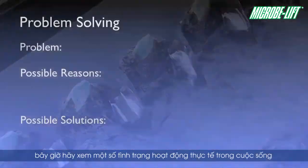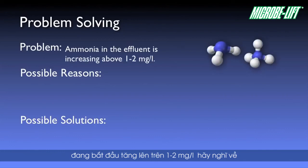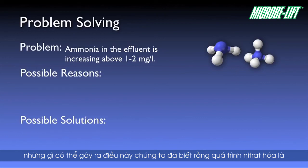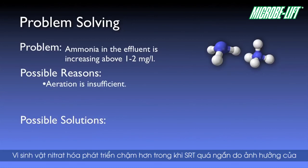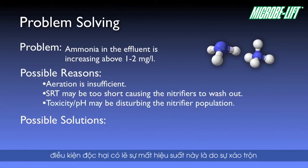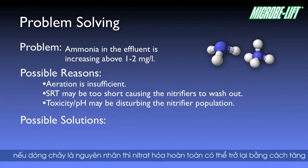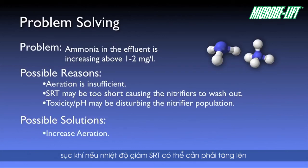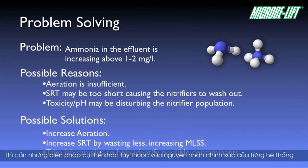Now let's take a look at some real-life operational scenarios. During your routine operational sampling, you notice that the ammonia in the effluent is beginning to rise above 1–2 mg per liter. We know that nitrification is an oxygen-hungry process — perhaps the aeration is insufficient. We also know that nitrifiers grow more slowly, so perhaps the SRT is too short due to an influence of temperature. Nitrifiers are also very sensitive to changes in pH or toxic conditions. Knowing these things, the possible solutions are easily determined: if low DO is the culprit, full nitrification will return by increasing aeration. If temperatures have dropped, the SRT may need to be increased to maintain a healthy nitrifying population. If pH or toxicity is the culprit, certain specific actions may be required depending on the exact cause.